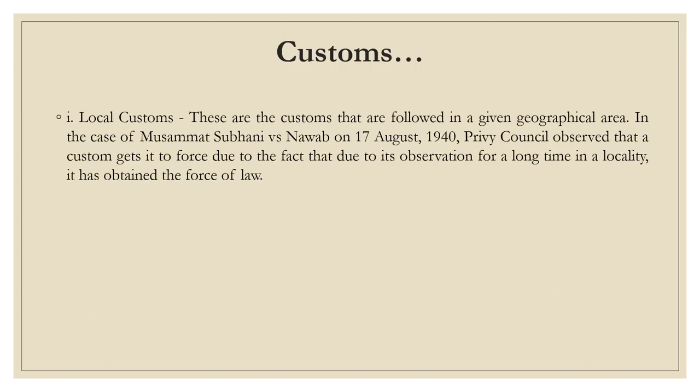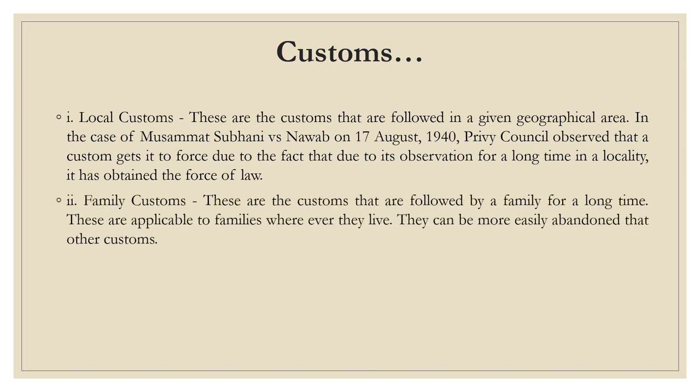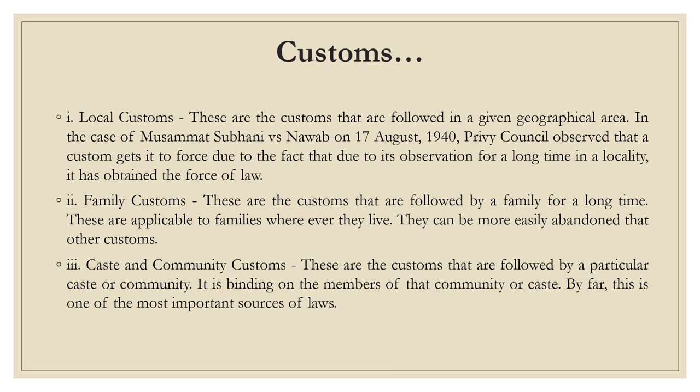The first custom is local custom. These are the customs that are followed in a given geographical area. In the case of Musammat Subhani versus Nawal, the Privy Council observed that a custom gets its force due to its observation for a long time in a locality, whereby it has obtained the force of law. Next is family custom. These are customs followed by a family for a long time, applicable to the family wherever they live. They can be more easily abandoned than other customs. Third is caste and community custom, which are customs followed by a particular caste or community, binding on its members. By far, this is one of the most important sources of law. Fourth is guild custom — these are customs followed by traders.